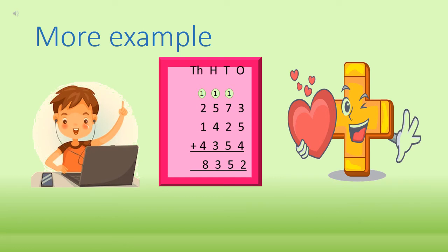Let's take another example. Suppose we have 2,573, 1,425, and 4,354. First of all, we will arrange these numbers in columns of thousands, hundreds, tens, and ones. The digits in the ones column are 3, 5, and 4. 3 plus 5 is 8, and 8 plus 4 is 12. We write 2 in the ones column and carry 1 to the tens column. Now in the tens column we have 7, 2, and 5, plus 1 carry over. 7 plus 2 is 9, plus 5 is 14, plus 1 is 15. We write 5 in the tens column and carry 1 to the hundreds column.